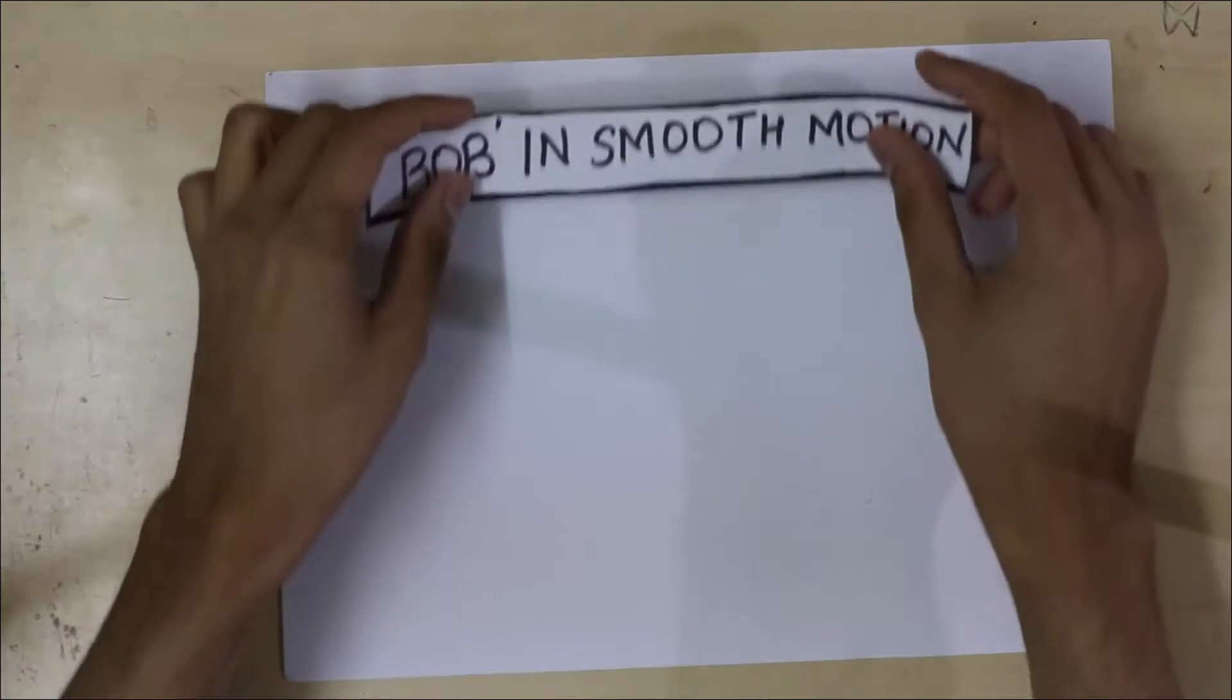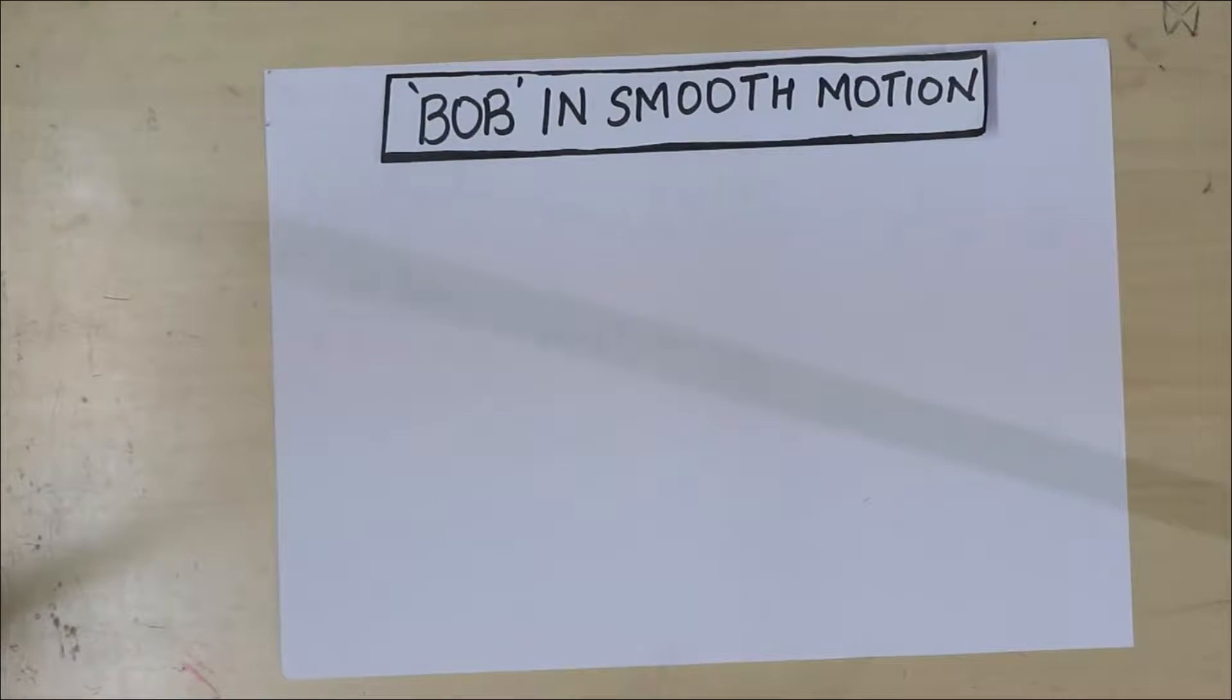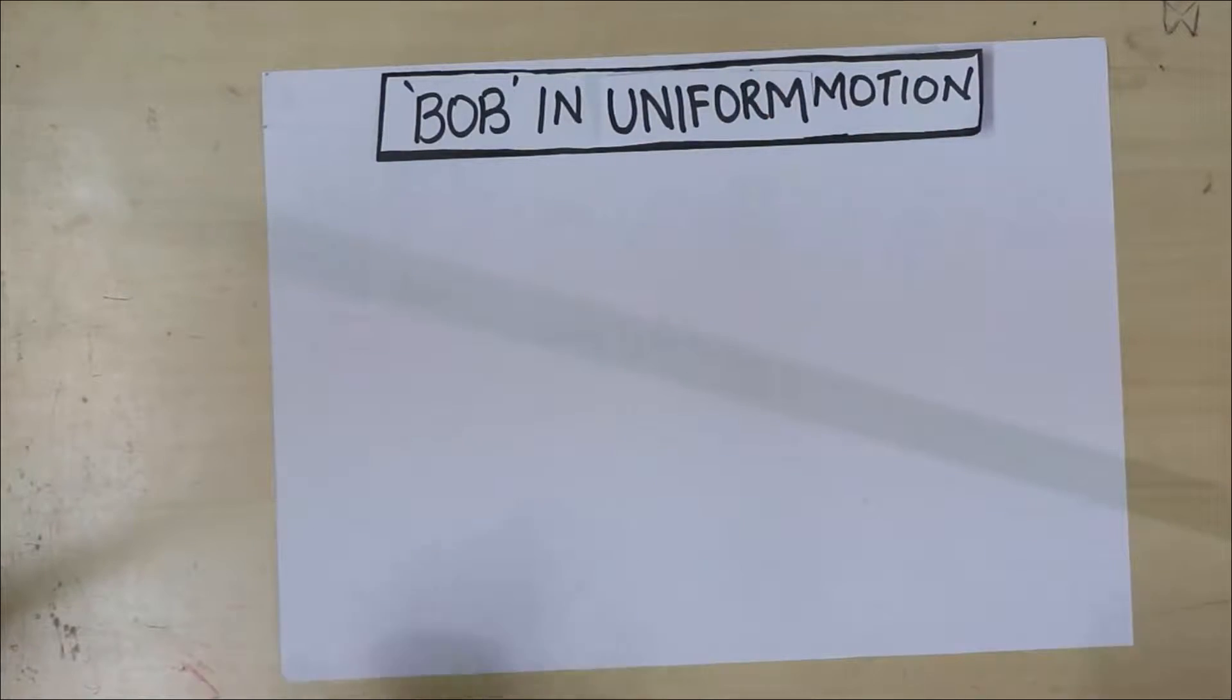Now again, I'm going to start with the most simple case we can think of. The simplest case of motion I can think of is what we call Bob in Smooth Motion. Now the technical term for smooth motion is called Uniform Motion.